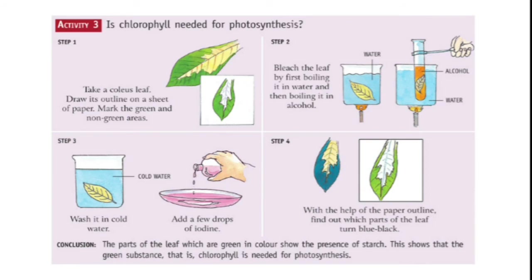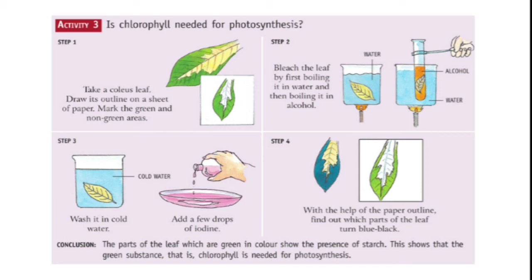Activity 3 proves that chlorophyll is needed for photosynthesis. Take a coleus leaf, which is not completely green — it doesn't have chlorophyll in certain parts. Draw its outline on a sheet of paper and mark the green and non-green areas. Then bleach the leaf by boiling it in water, then in alcohol, and wash it in cold water.